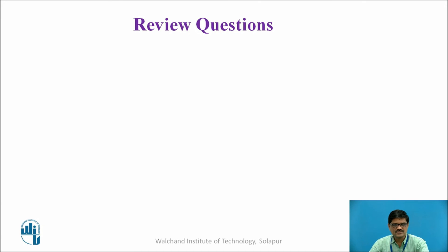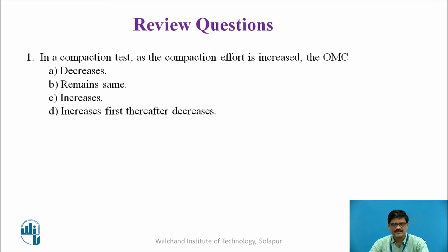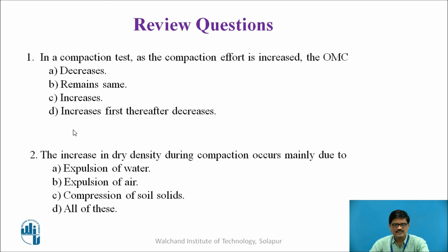These are certain review questions. Let us take a pause, go through these questions, think over them and resume the video. The first question is: in a compaction test, as the compaction effort is increased, the OMC — four options are given. The second question: the increase in dry density during compaction occurs mainly due to — again four options. Think over it, get the answer, and resume the video.